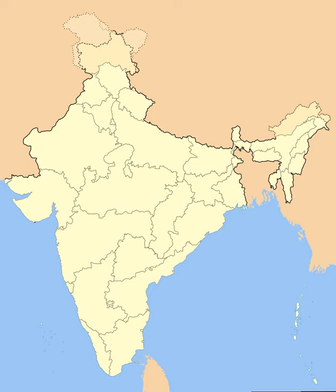Bombay state was split into the linguistic states of Gujarat and Maharashtra on 1 May 1960 by the Bombay Reorganization Act. Nagaland was formed on 1 December 1963. The Punjab Reorganization Act of 1966 resulted in the creation of Haryana on 1 November and the transfer of the northern districts of Punjab to Himachal Pradesh. The act also designated Chandigarh as a union territory and the shared capital of Punjab and Haryana. Madras state was renamed Tamil Nadu in 1968.